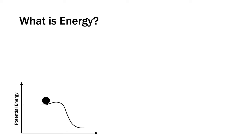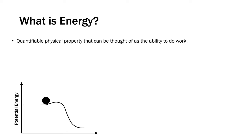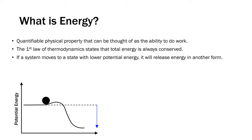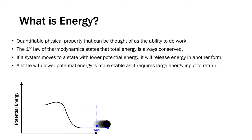Starting at the beginning: what is energy? Energy is a quantifiable physical property that can be thought of as the ability to do work. The first law of thermodynamics states that the total energy in the universe is always conserved. If a system moves from a state with high to lower potential energy, it will release energy in some other form — in the ball example, gravitational energy becomes kinetic energy. A state with lower potential energy is more stable as it requires large energy input to return to its original state.